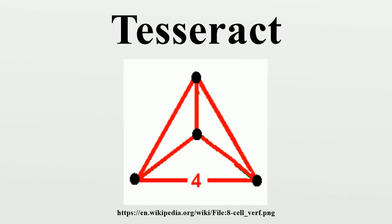In geometry, the tesseract is the four-dimensional analog of the cube. The tesseract is to the cube as the cube is to the square. Just as the surface of the cube consists of six square faces, the hypersurface of the tesseract consists of eight cubical cells.